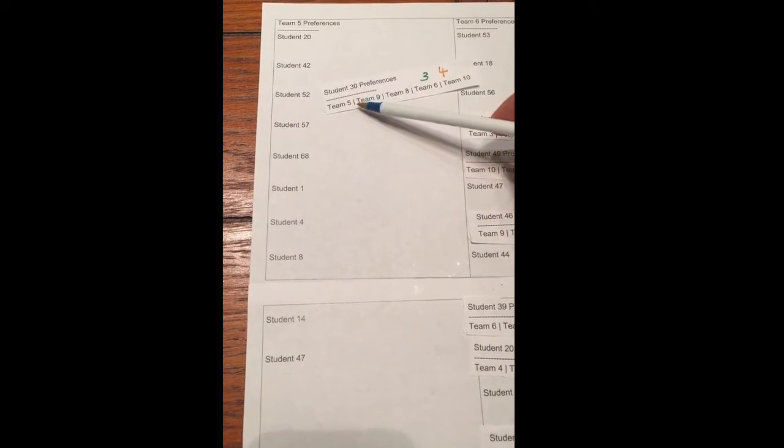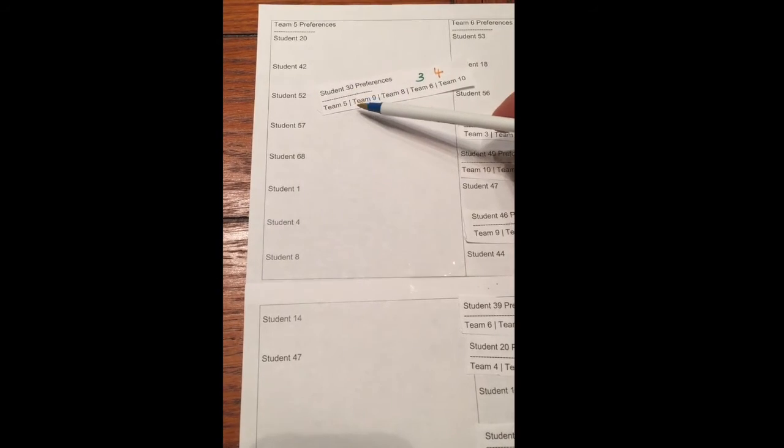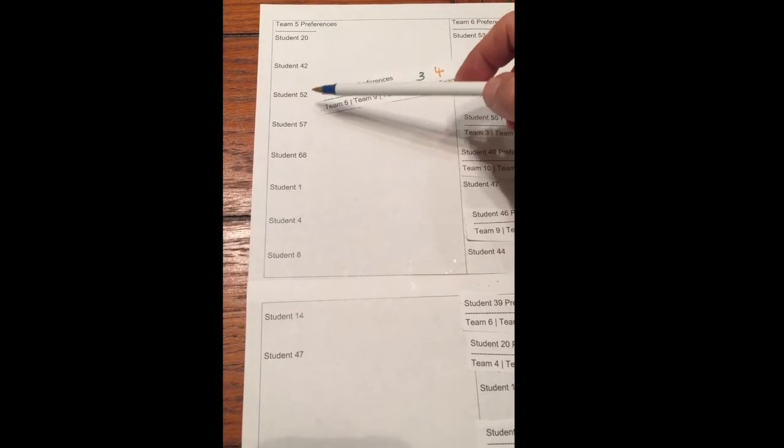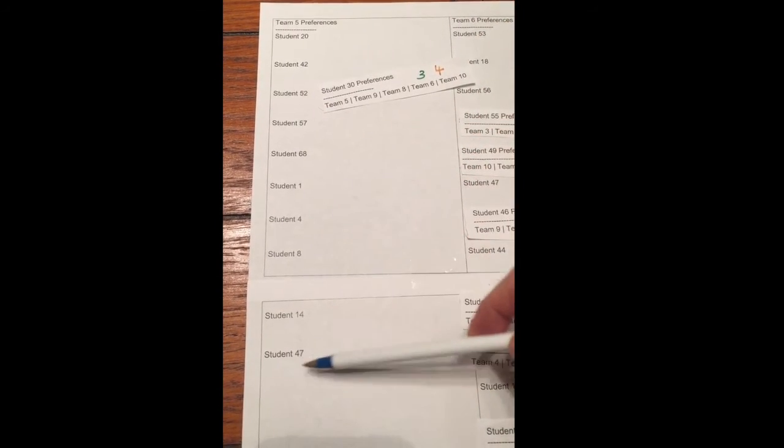In Phase 1, we're going to place each student on their first ranked team that prefers them. In this example, Student 30 prefers Team 5 as their top ranked team. However, Team 5 does not include Student 30 in their rankings.